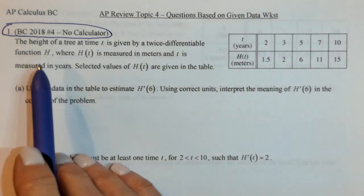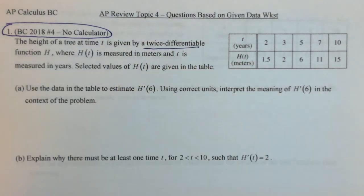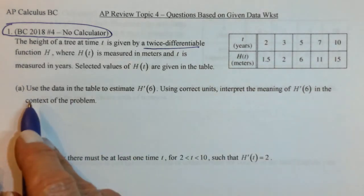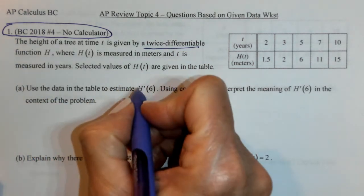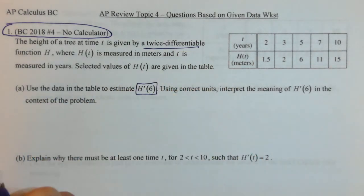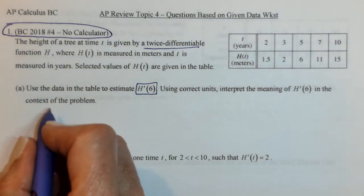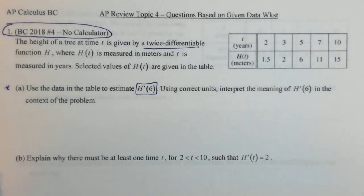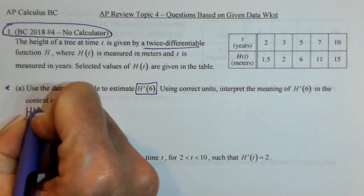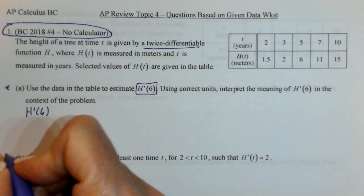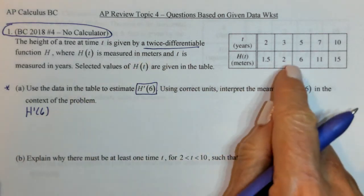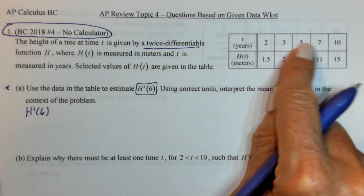The height of the tree is given by a twice differentiable function H, where H is measured in meters and T in years. Part A: Use the data in the table to estimate H prime of 6. Using correct units, interpret the meaning of H prime of 6 in context. H prime of 6 is the slope of H at time 6, so we use the surrounding time values from 5 to 7.